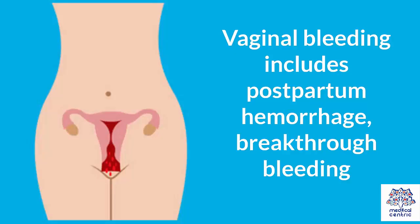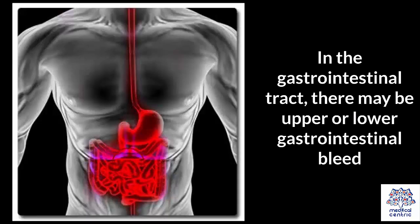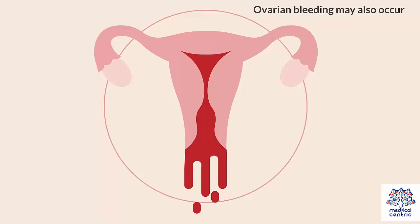Hematochezia. Vaginal bleeding includes postpartum hemorrhage and breakthrough bleeding. In the gastrointestinal tract, there may be upper or lower gastrointestinal bleed. Ovarian bleeding may also occur.